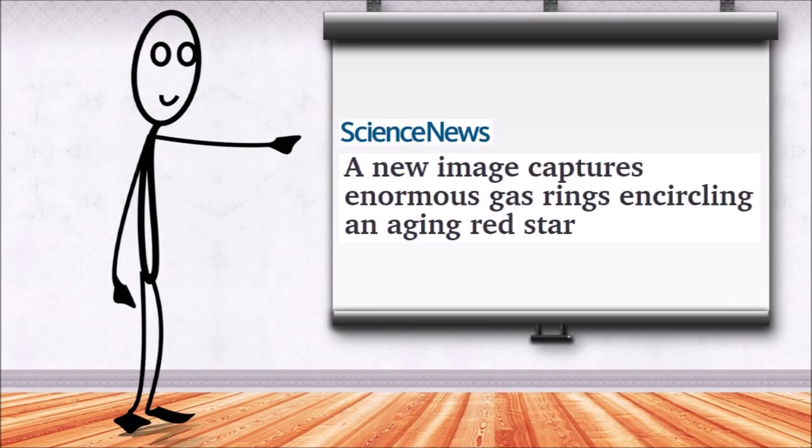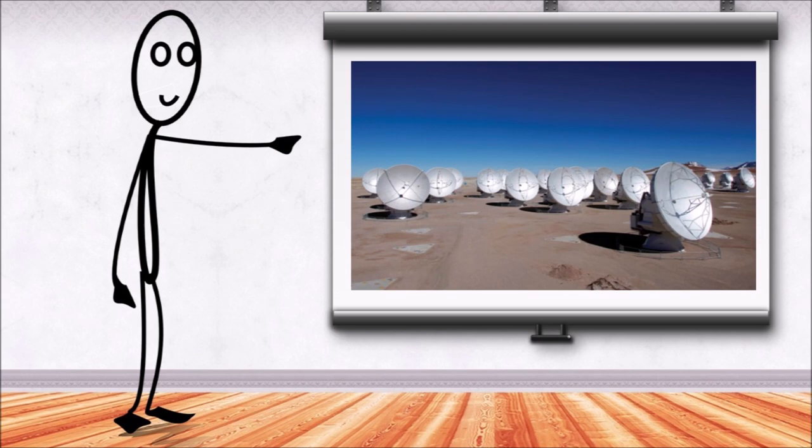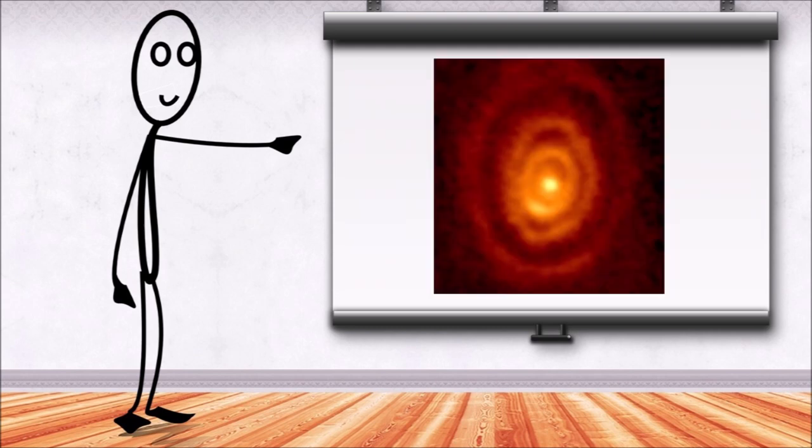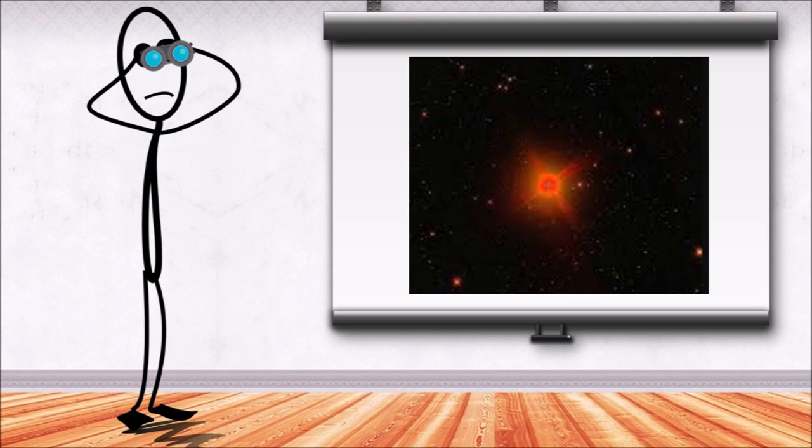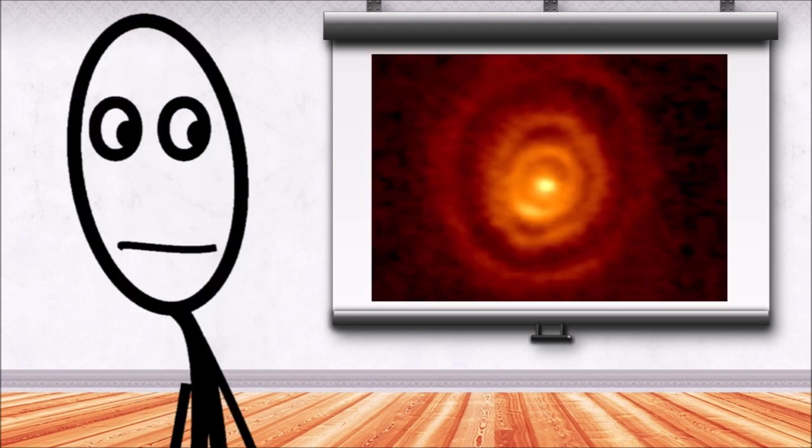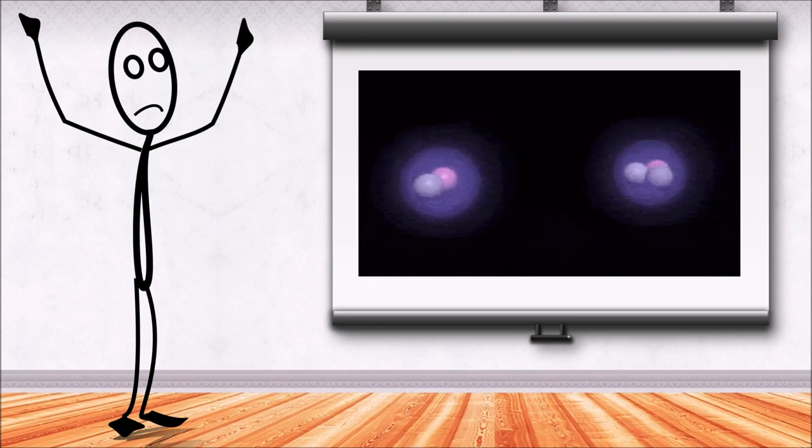Number 6. An image from Atacama Large Millimeter Array in Chile captured enormous gas rings around an aging red star. The star named V-hydrae is losing mass as it transforms into a white dwarf. But such ring-like structures have never been seen in any object like this before.